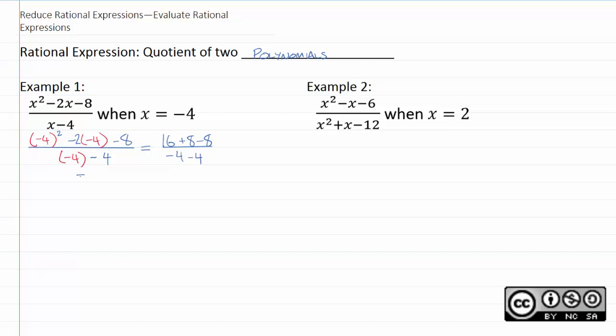16 plus eight minus eight is just 16. Negative four minus four is negative eight. And 16 divided by negative eight is simply negative two.